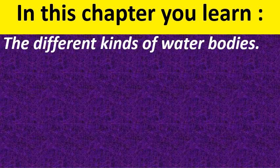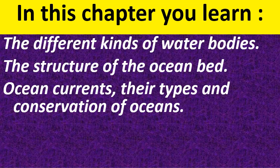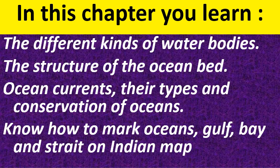In this chapter, you will learn the different kinds of water bodies, structure of ocean bed, ocean currents, their types, and conservation of oceans. You will also know how to mark oceans, gulf, bay, and strait on the Indian map. I will show you various pictures so you can learn them easily.